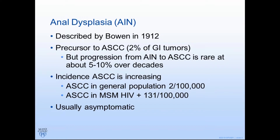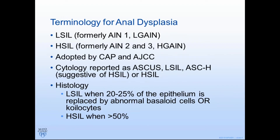The incidence of anal cancer is increasing both in the general population and particularly in the HIV population. The symptoms of anal dysplasia are usually none — these patients are generally asymptomatic. Terminology is important and it's changed a lot. If you look at the literature over the last decade, you'll see it described as AIN, anal dysplasia, LGAIN, HGAIN — there are lots of terms.